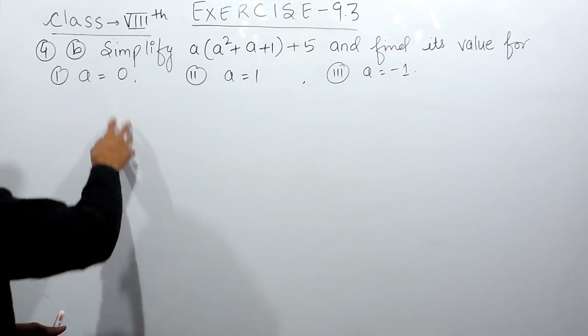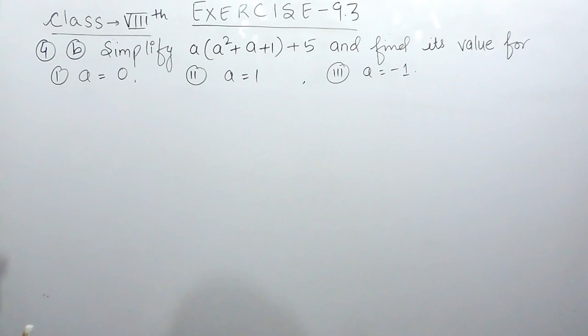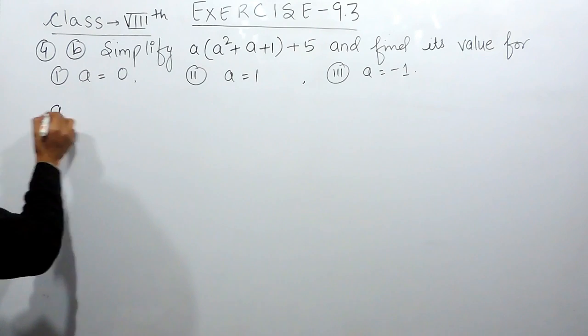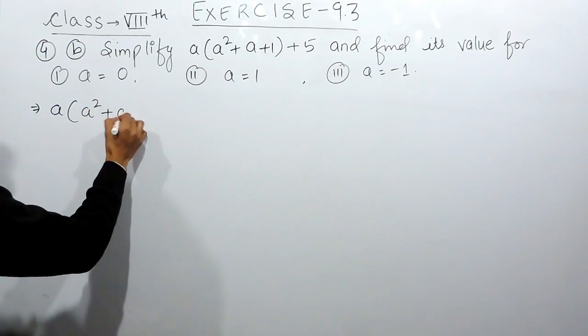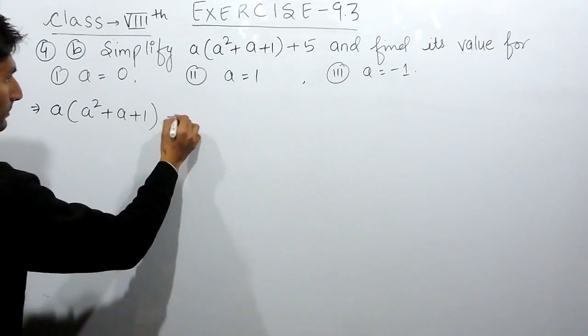After that you have to substitute the value of a as 0, 1, and minus 1. So let's first of all simplify the expression which is a multiplied by a squared plus a plus 1, plus 5.